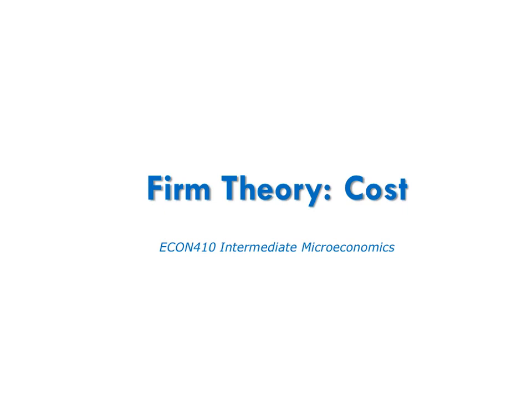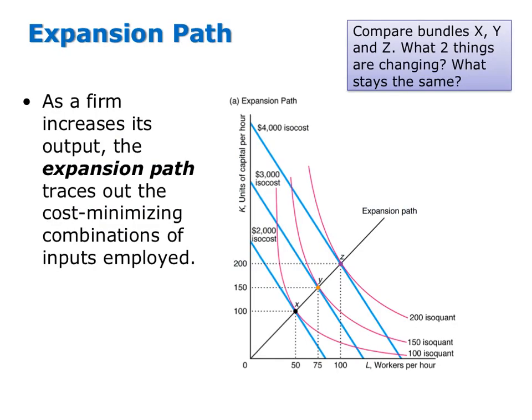This video is part of Firm Theory Cost. In it, I will discuss expansion paths and their relationship to long-run total cost curves. An expansion path traces out a firm's cost-minimizing combination of inputs as it expands or increases its level of production.